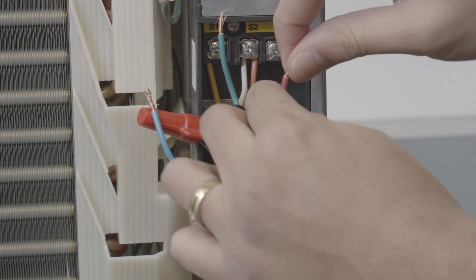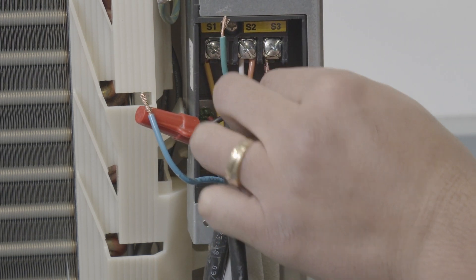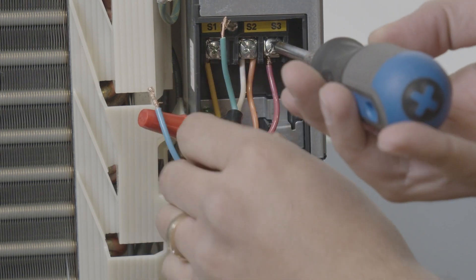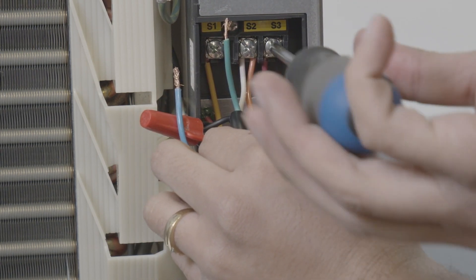For the S3 terminal, you will simply connect the S3 wire coming from the outdoor unit. We strongly recommend not breaking the S3 wire.